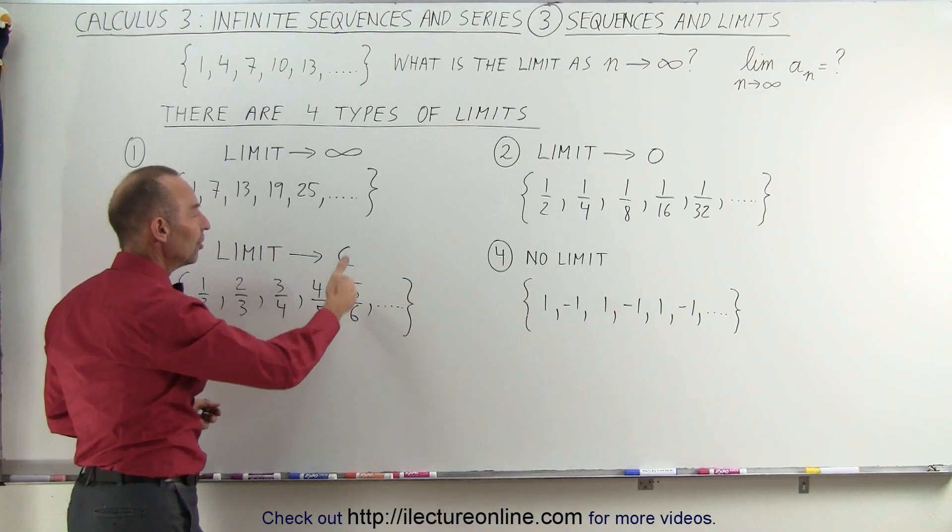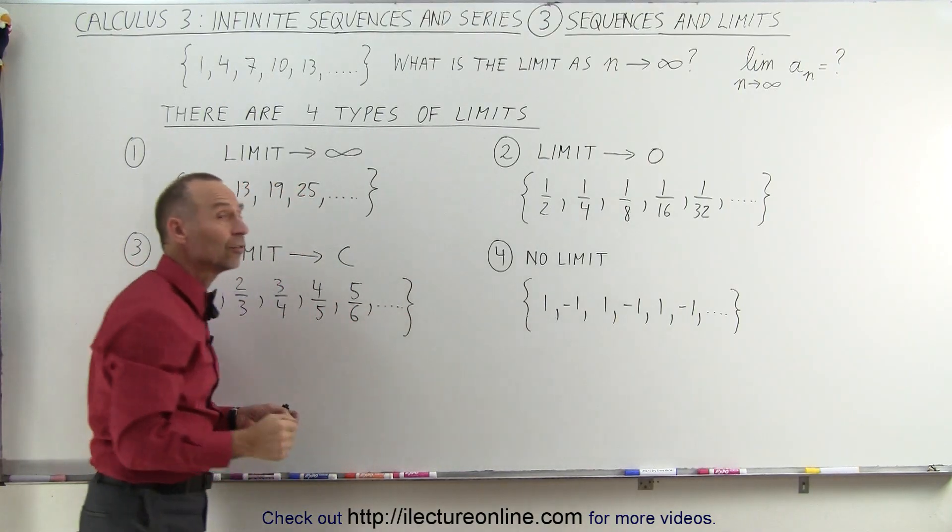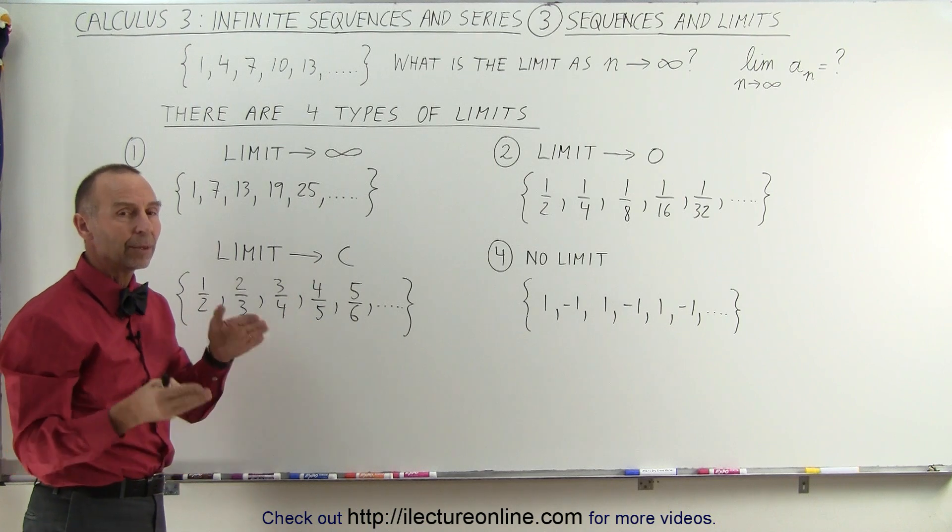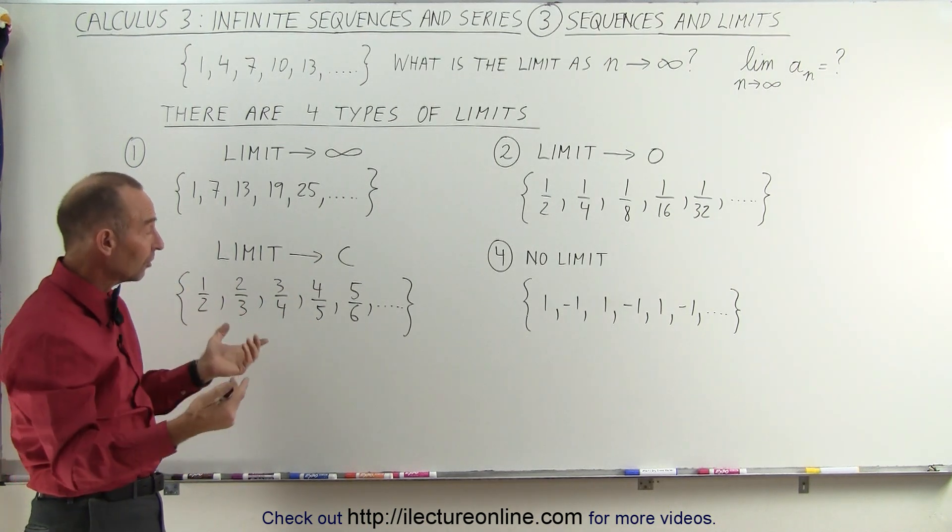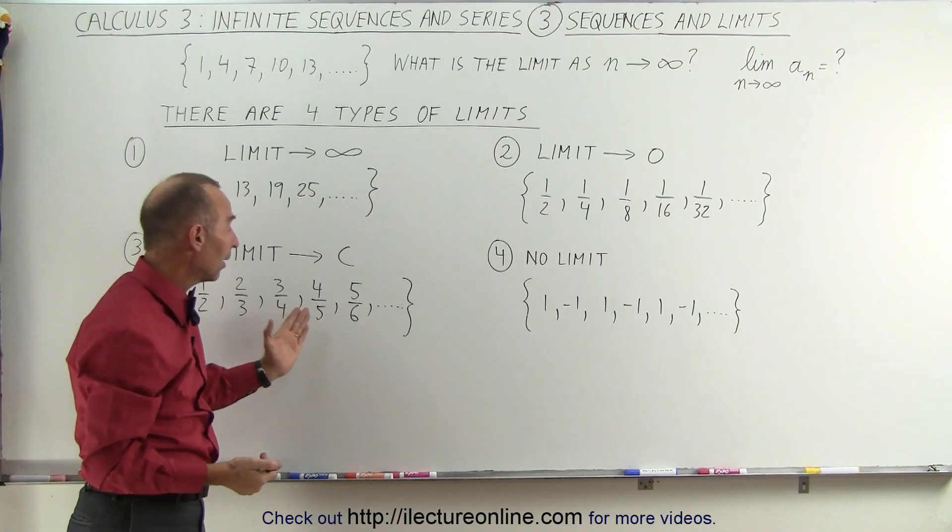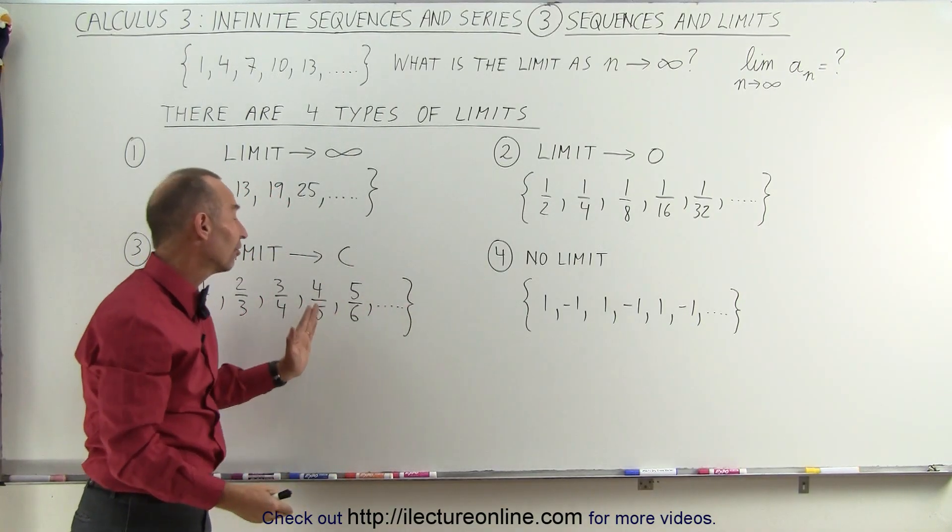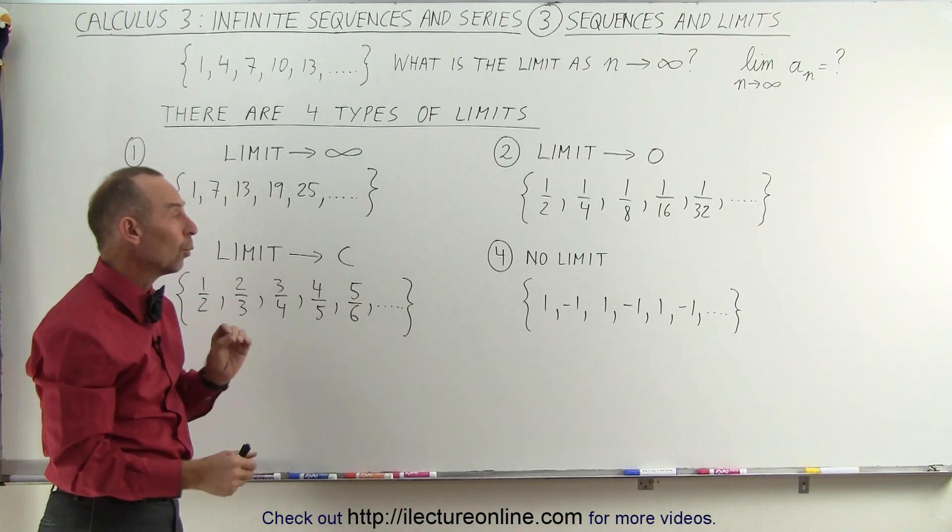And as you continue progressing with this sequence, you can see that the ratio of the numerator to the denominator becomes closer and closer to the value of one, which is a constant. And so, in the limit, as you go to the nth value as n approaches infinity, this limit will then converge to one.